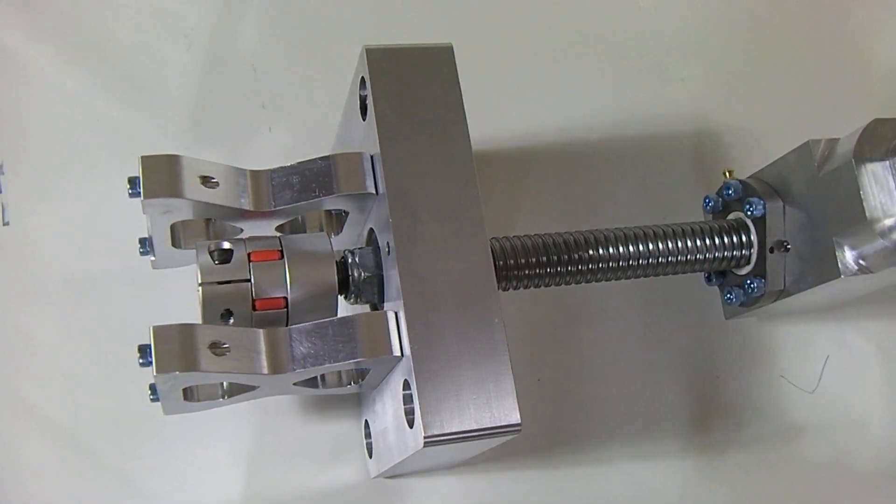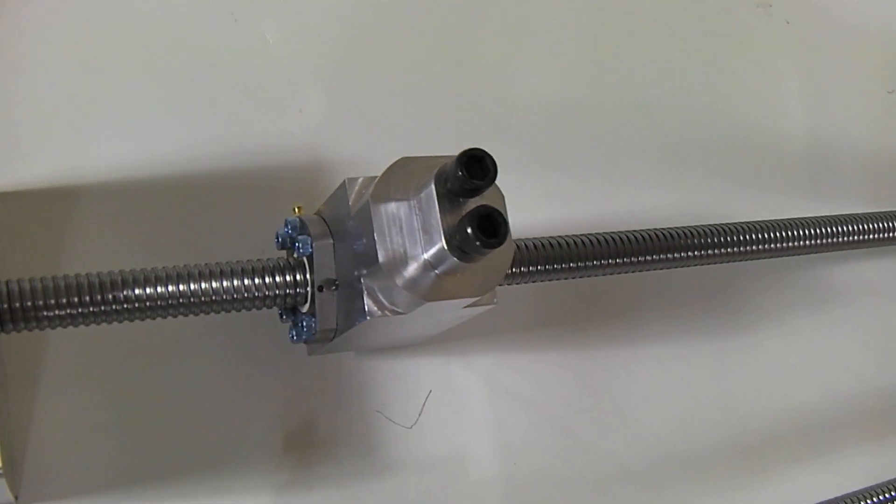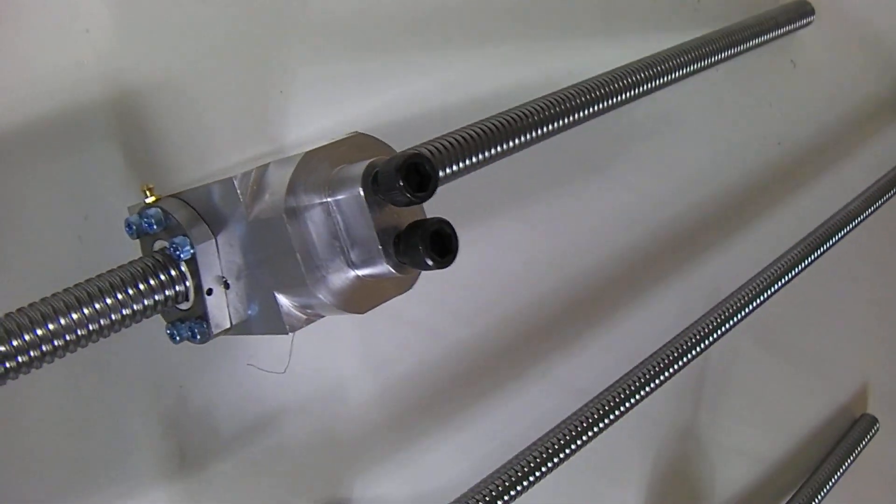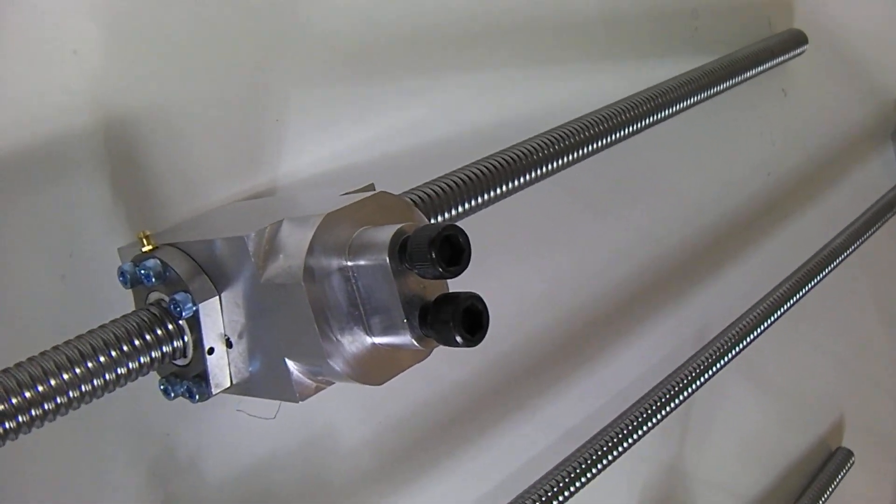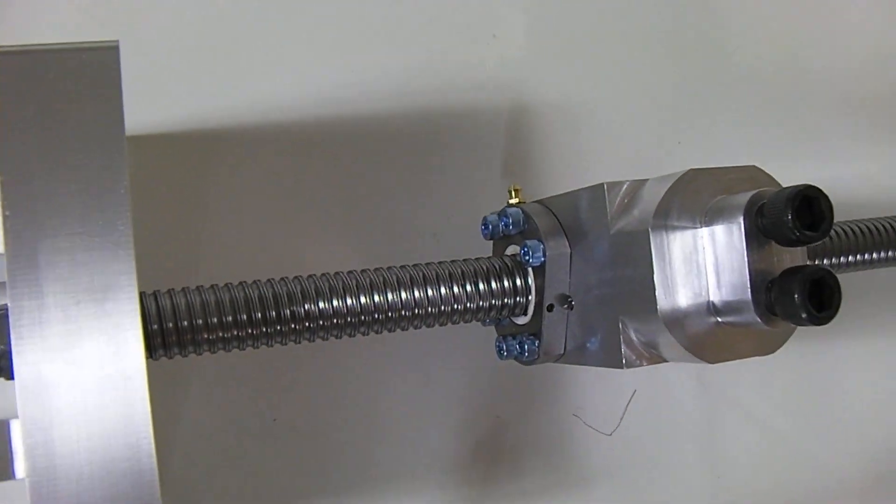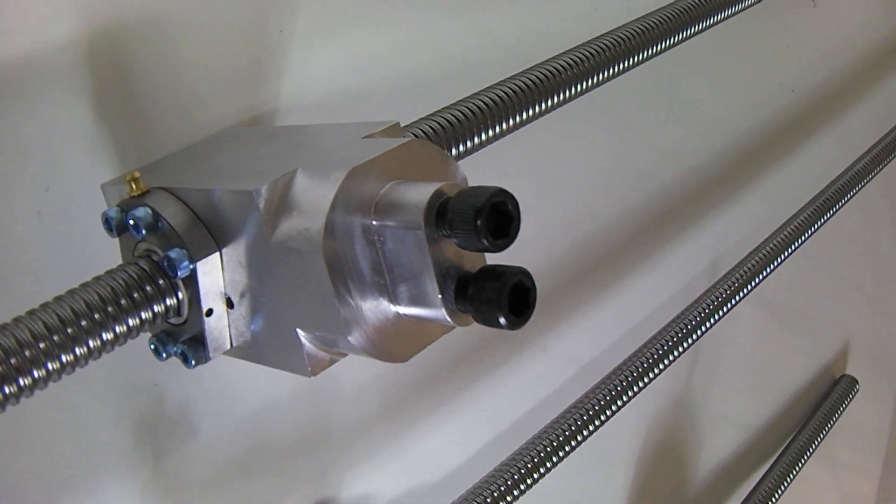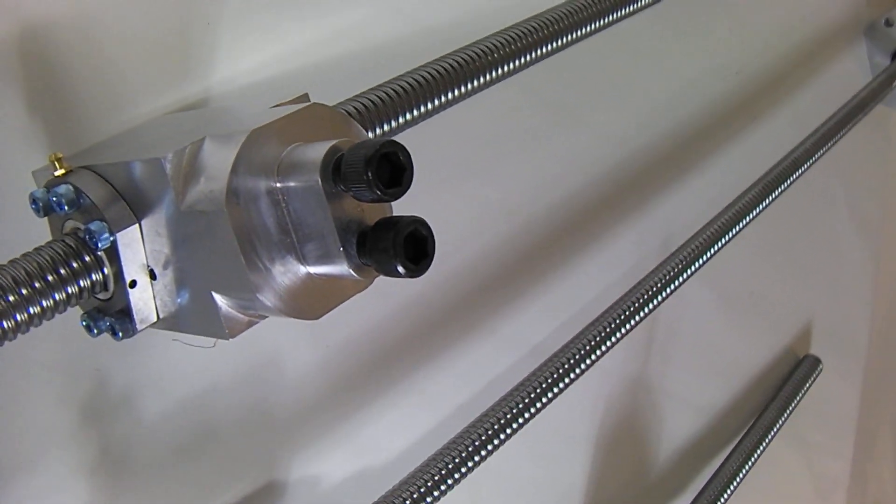Next to that we have the Z assembly. It gets a rather large Z ball nut holder - it's a 25 millimeter C7 grade screw with double nuts that I reworked for zero backlash. I went with two M12 bolts instead of one just to make it stronger.